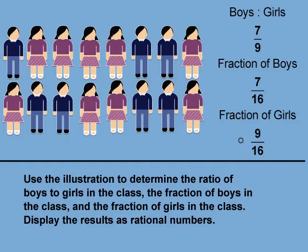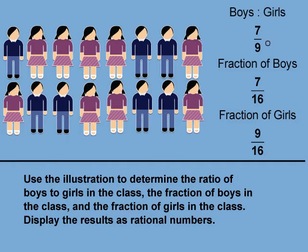There are a couple more observations to make. First, the total number of students — the whole — is made up of two parts: the number of boys and the number of girls. So the ratio of boys to girls is a part-to-part ratio. The fractions of boys and girls are part-whole ratios. All of these are rational numbers, but some are fractional amounts.